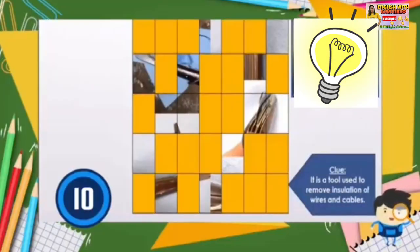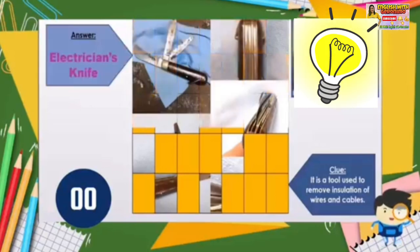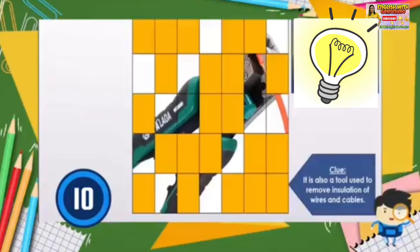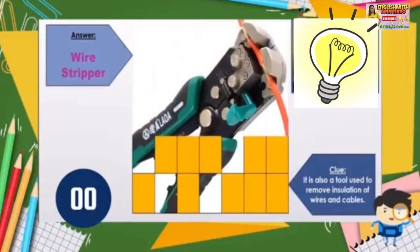It is a tool used to remove the insulation of wires and cables. It is used to remove the insulation or the covering — the skin of wires and cables. The answer is wire stripper. Always remember, students, that we have five tools that we can use in removing the skin of the cables or wires.